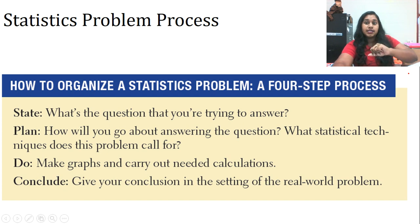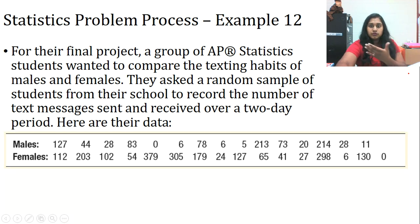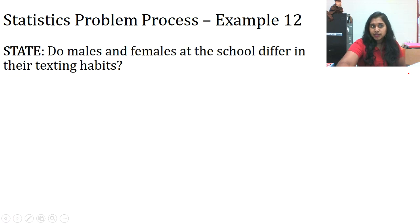All right. Let's move on to the final thought. How do I organize a statistics problem? So, if I give you a real question, what am I going to do? Well, we're going to state, plan, do, and conclude. So, let's look at that. So, for the final project, the group of AP students wanted to make the text – compare the texting habits of males and females. They asked a random sample of students from their school to record the number of text messages sent and received over a two-day period. Here is their data. So, we've got some data. What conclusion should the students draw? Give appropriate evidence to support your answer. Great statistics question, but how do we break it down? So, here's that four-step process again. State. Do males and females at the school differ in their texting habit? Plan. We're going to start with that parallel box plot.